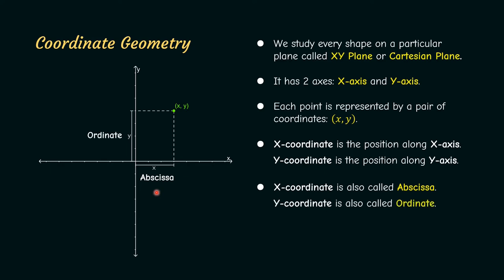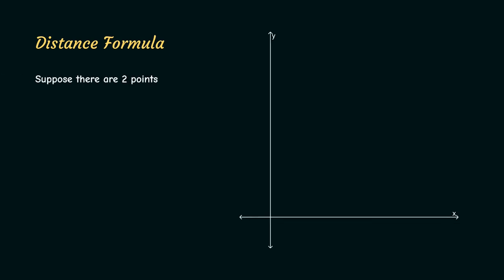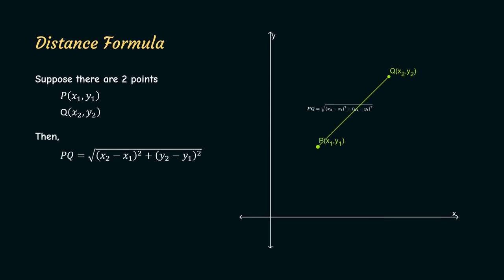Now we will see some of the formulas in coordinate geometry. We will start with the distance formula. Suppose there are two points on the plane, P(x1, y1) and Q(x2, y2). Then the distance between these two points is given by: PQ equals the square root of (x2 minus x1) squared plus (y2 minus y1) squared. This seems to be a complicated formula, so you might be afraid seeing it. But trust me, this is one of the simplest formulas. Don't trust me? Well then, we will see its derivation.